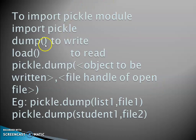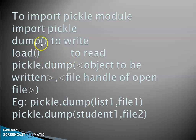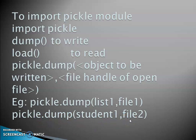To import the pickle module, use the syntax: import pickle. To write an object onto a binary file opened in write mode, you use dump to write and load to read. The syntax for dump is: pickle.dump(object_to_be_written, file_handle). For example: pickle.dump(list1, file) or pickle.dump(student1, file2).